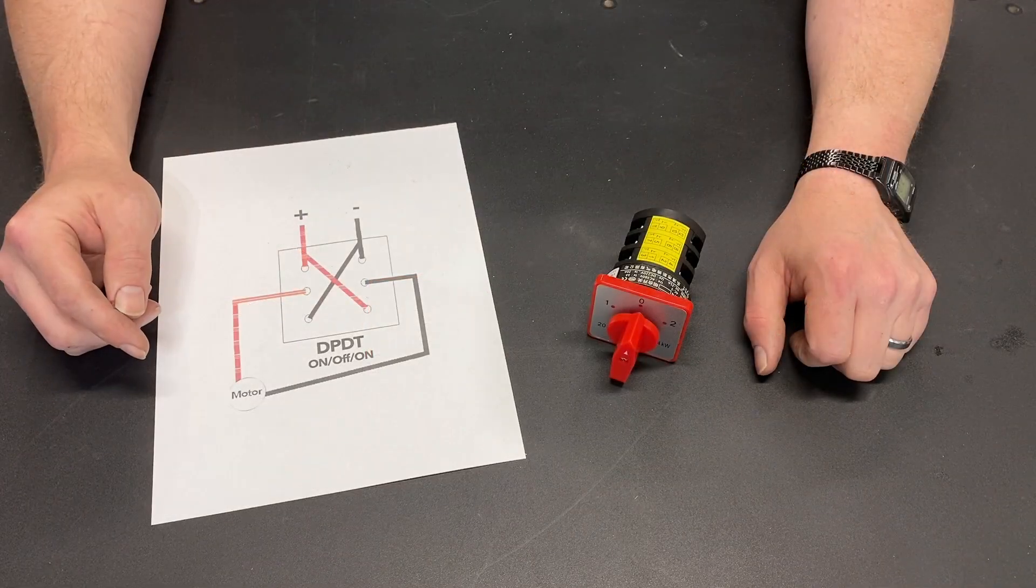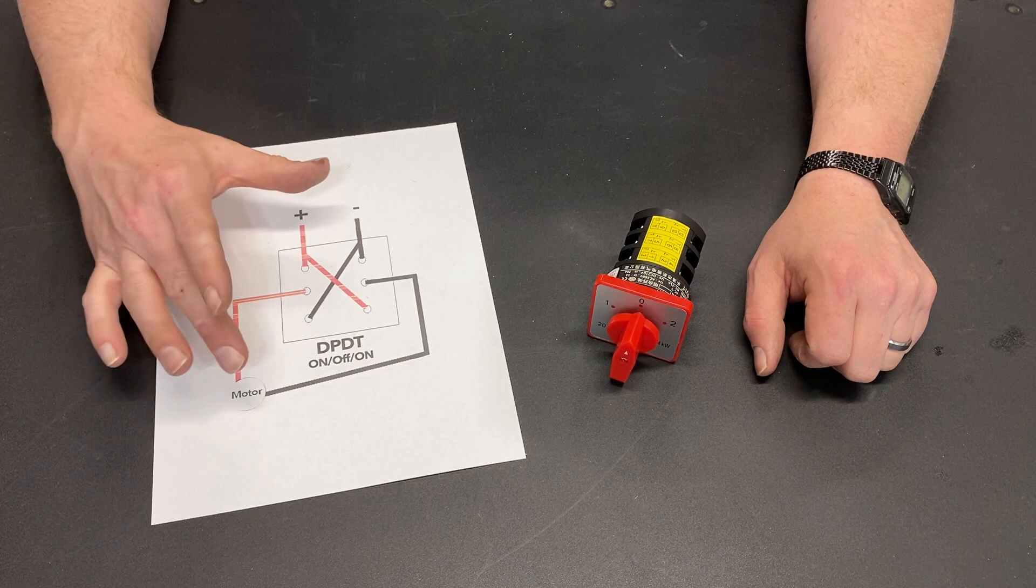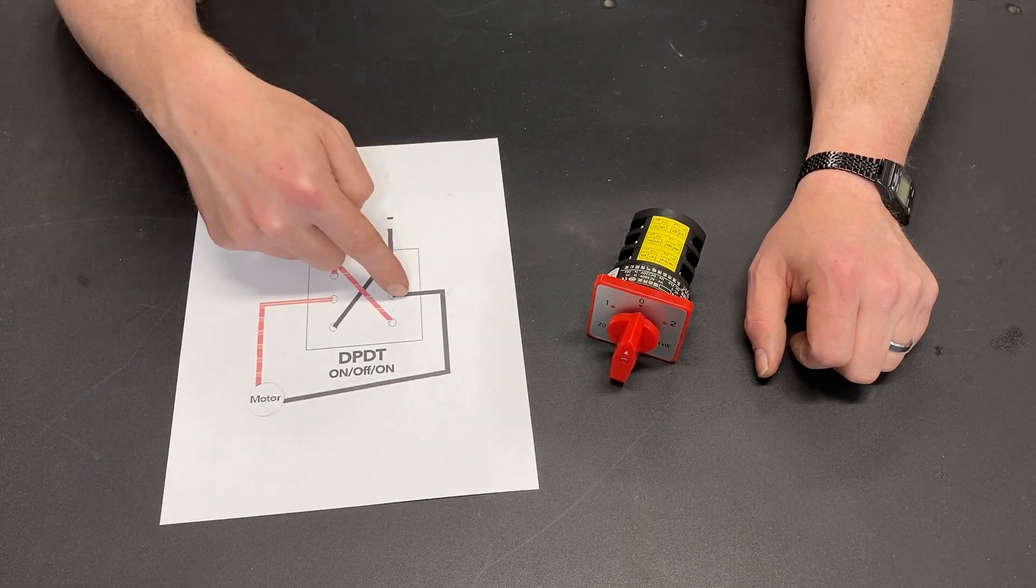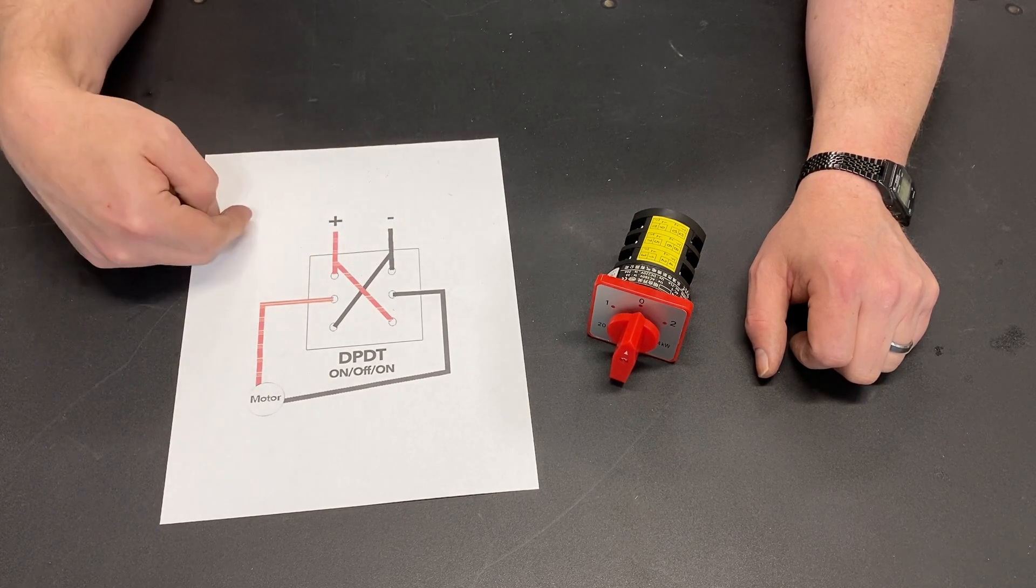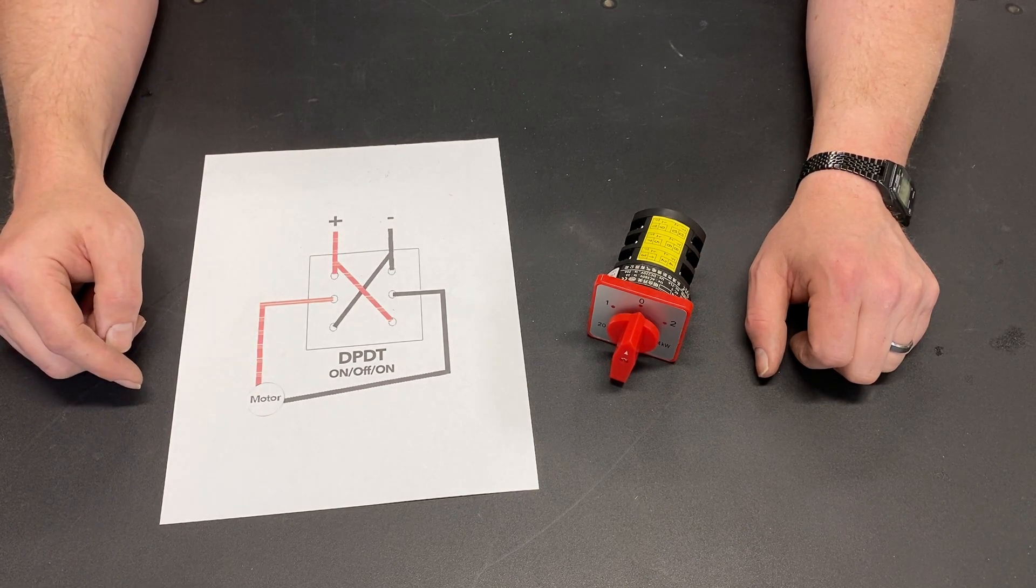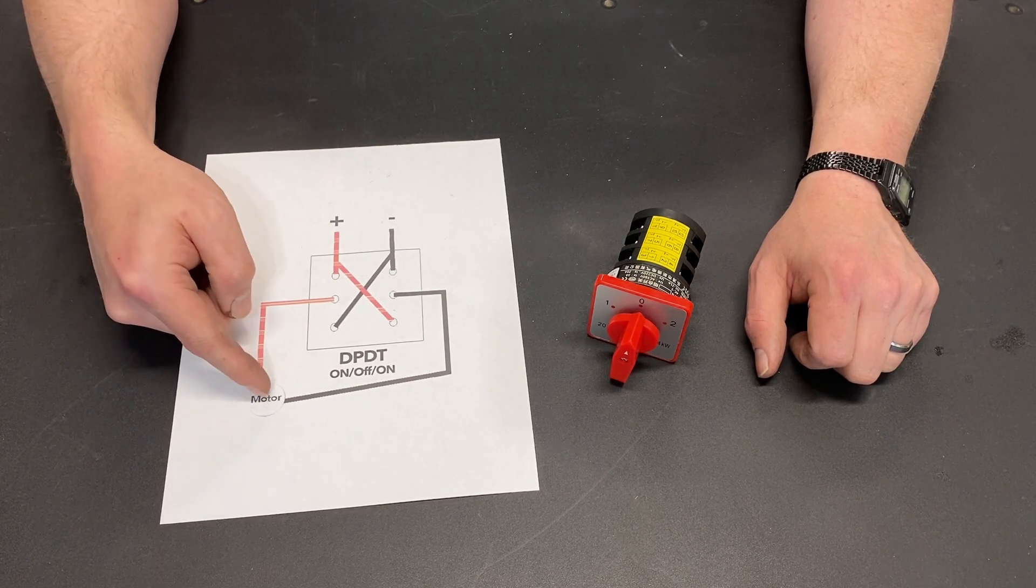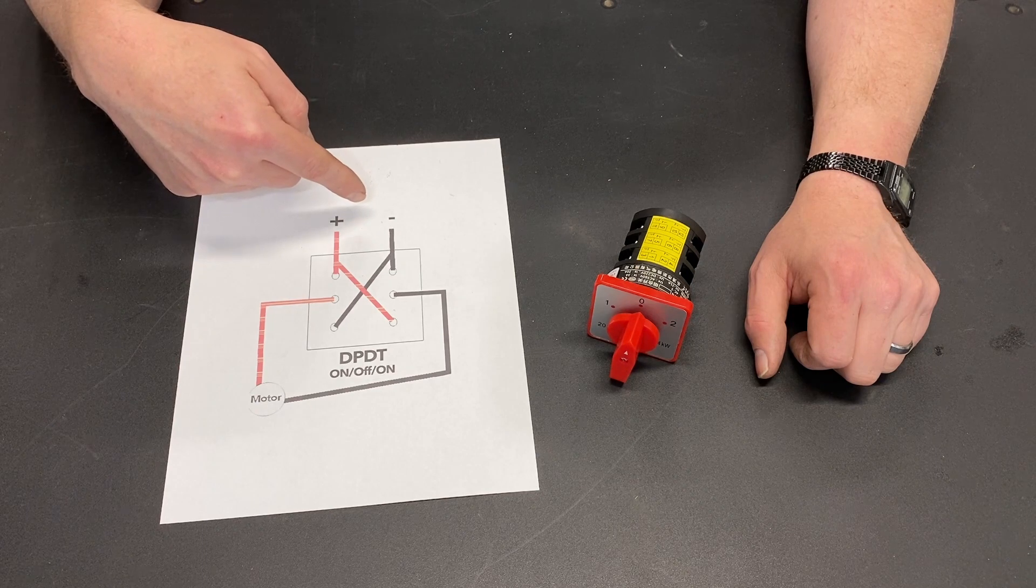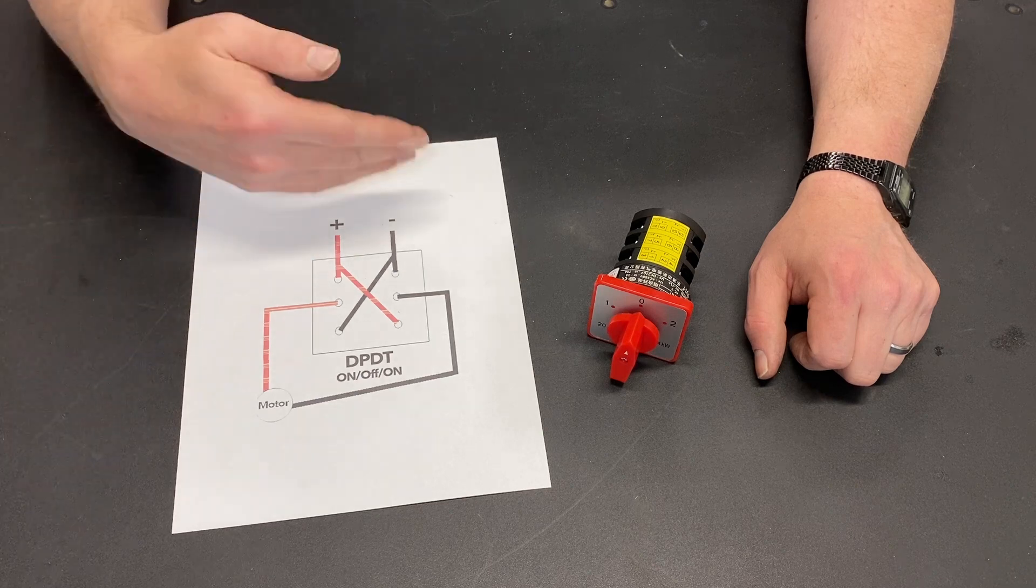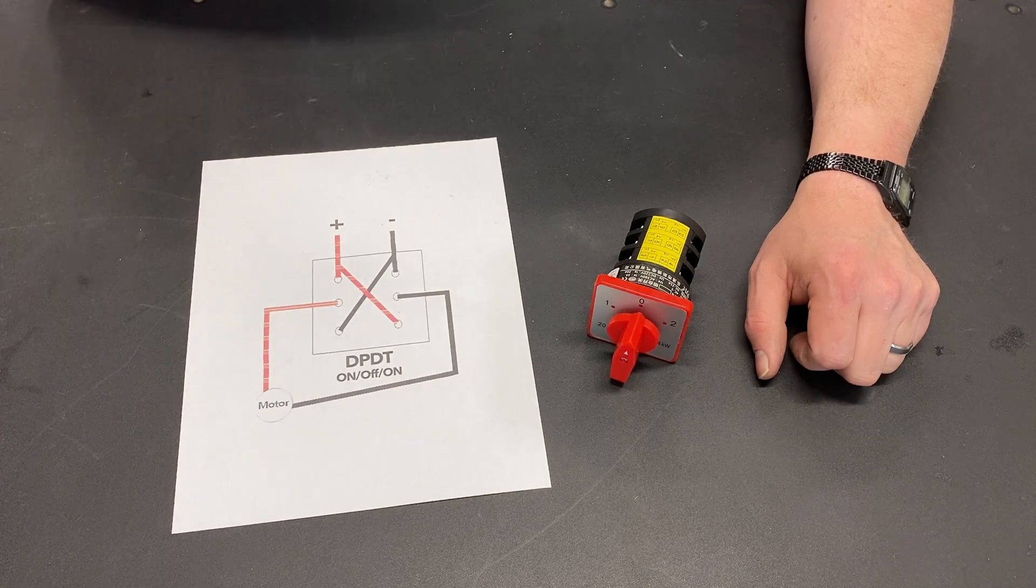Believe it or not, it basically wires up the same as a double-pole double-throw toggle switch. I've had a lot of questions on my drawings. Sometimes I have the power coming into the middle and exiting here, and sometimes I have the power coming in here and the motor there, and it really doesn't matter. The switch doesn't care which is which. You can have the power supply here and the motor here, or you can put the power supply here and the motor here. That's up to you. That's interchangeable, because all we're doing is reversing the polarity.